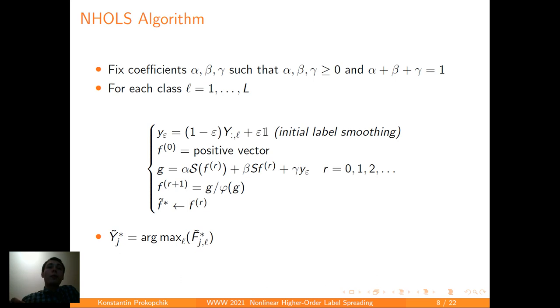Now revise our algorithm. First we fix the coefficients alpha, beta, and gamma such that they are non-negative, and the sum of them is equal to 1. And we do the iterations for each class from 1 to L separately. We start off with the initial label smoothing that is done to ensure the convergence of our algorithm. Then we also fix the initial positive vector f0, which can also be y epsilon, but can be any other positive vector that you want to choose.